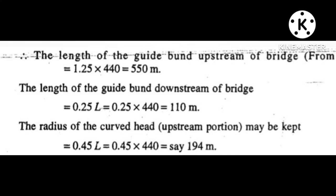The length of the guideband downstream of bridge is equal to 0.25 L, equal to 110 meters. The radius of the curved head — the upstream portion may be kept 0.45 L, say 194 meters.